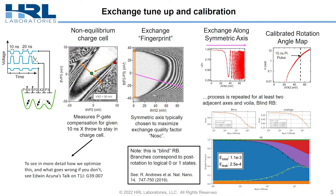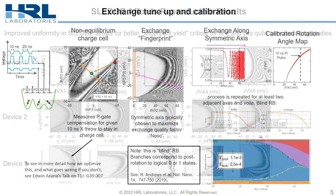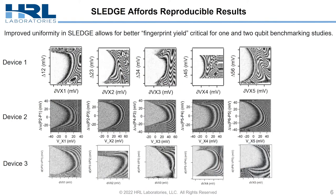So I said you need two axes — how often can we actually do that? While we're still gathering statistics on these devices, SLEDGE does afford a higher what we call fingerprint yield, as can be seen in these three devices. They're not all from one hero chip or wafer — they are spread across several fab runs. And it's critical that we have this high yield for one and two qubit benchmarking studies.